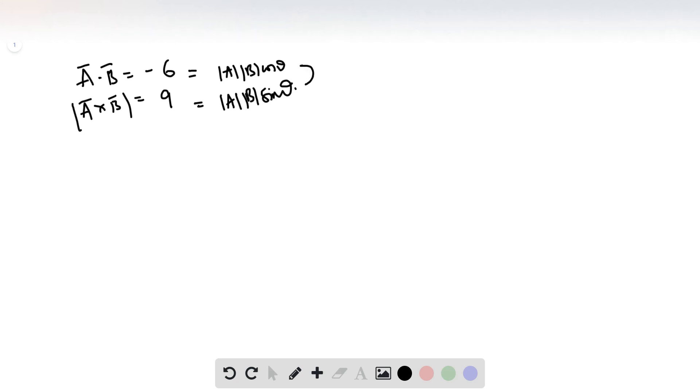Hence, if we divide these two equations, we can see that minus 6 divided by 9 is equal to cos theta divided by sin theta, which implies tan theta is minus 3 by 2.